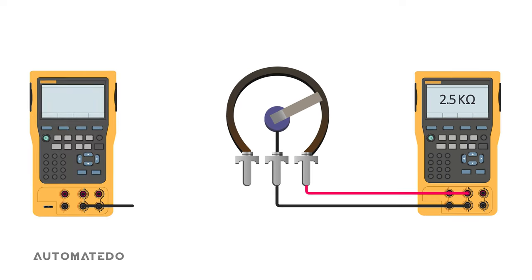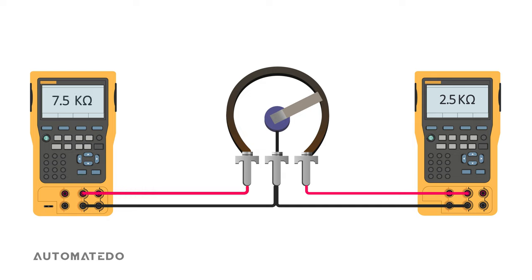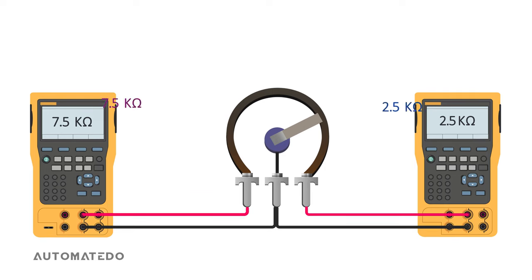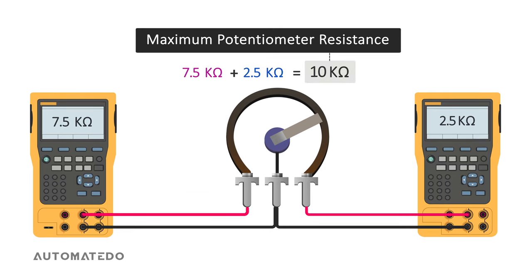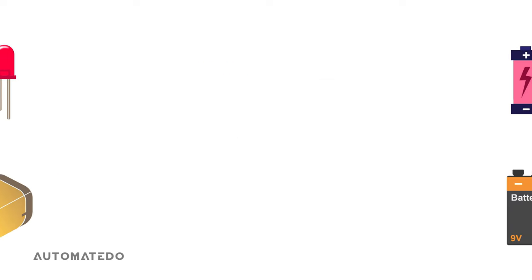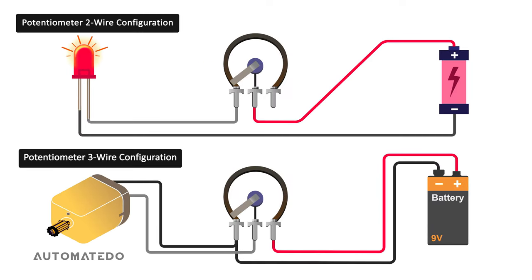Note that if we connect another multimeter's probes to the middle terminal and the other unused outer terminal of the potentiometer, the sum of the resistance shown by these two multimeters is equal to the maximum resistance of the potentiometer. To fulfill your learning, you need to know how the potentiometer can be connected in different configurations in the most common electronic applications.